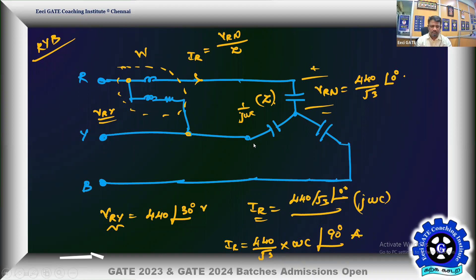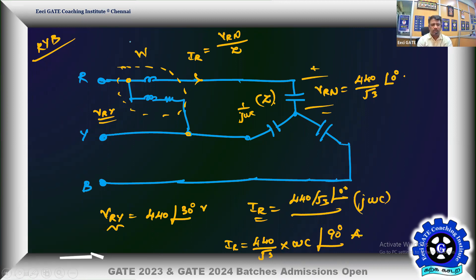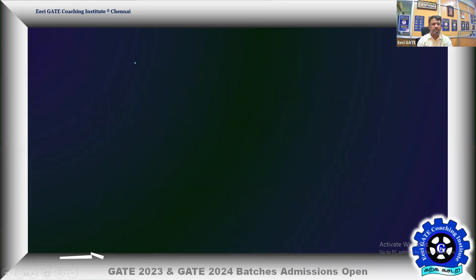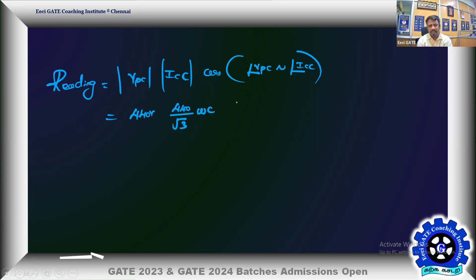Now we focus on the wattmeter reading. The wattmeter reads: (potential coil RMS voltage) × (current coil current) × cos(angle between them). The potential coil senses the line voltage, so it's 440 V. The current coil current is (440/√3) × ωC. Since it's a purely capacitive load, the current leads by 90 degrees — so its angle is plus 90 degrees.